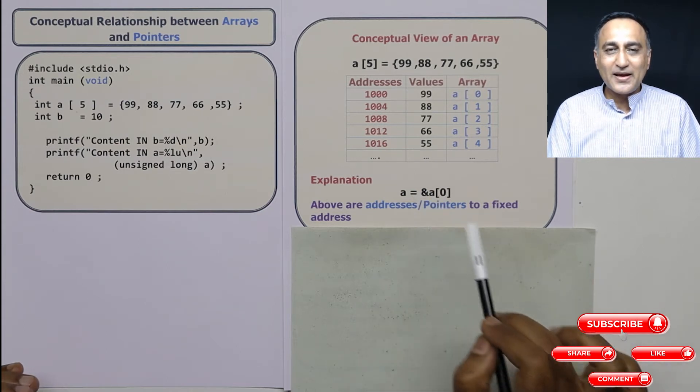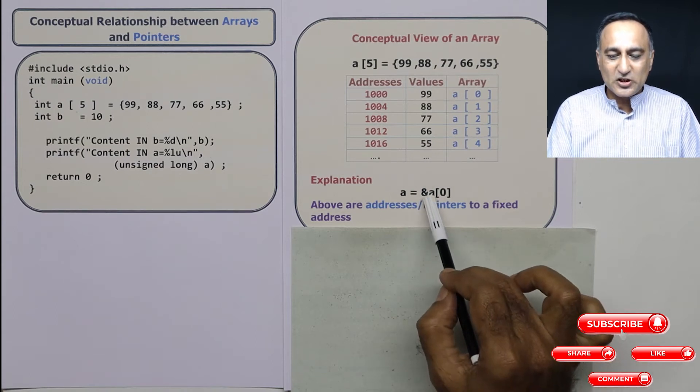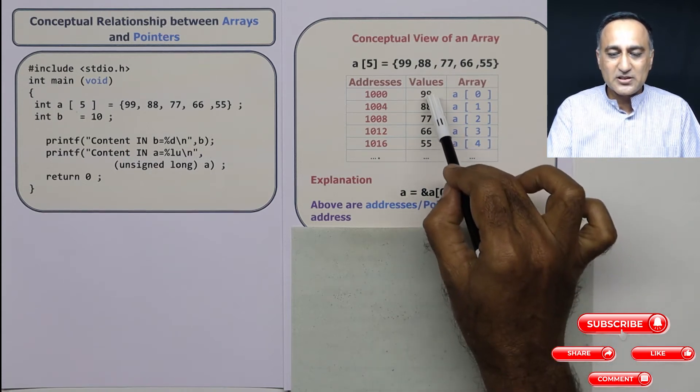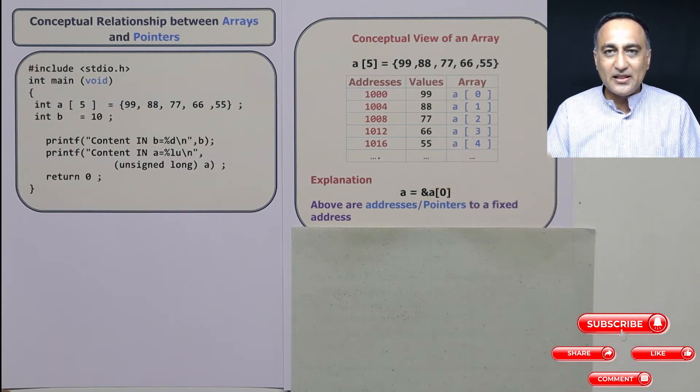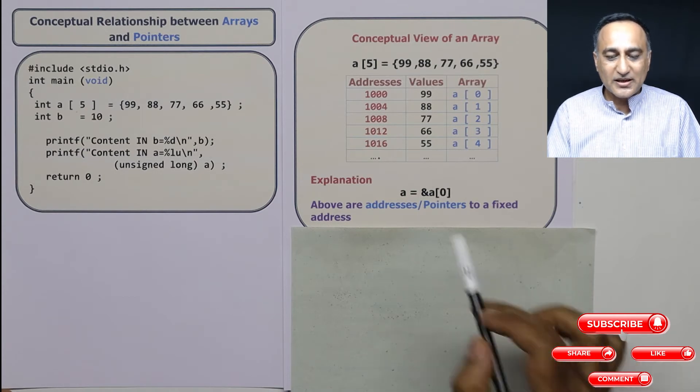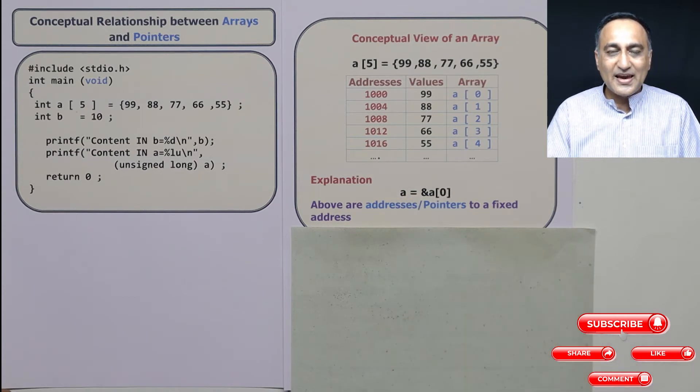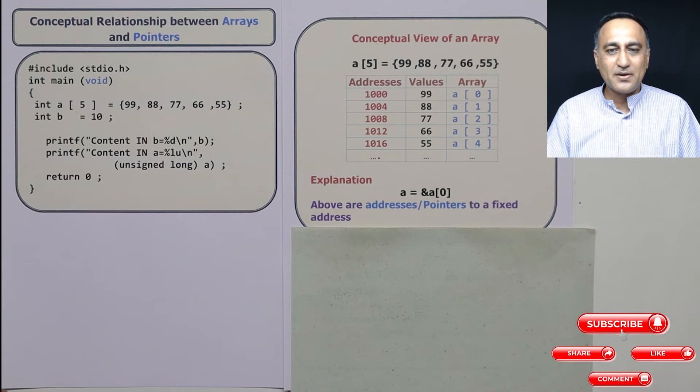So the name of the array is the address of the zeroth element. What is the zeroth element? 99. So it is the address of 99 in the main memory. The difference between your normal pointer variables and your array is, array is a constant type of a pointer variable. Let me explain what I mean by that.